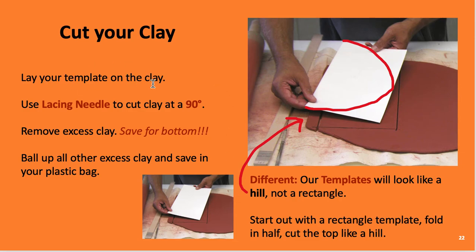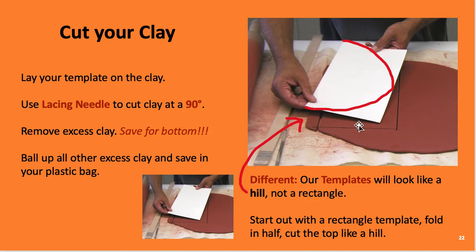Lay your template on the clay and hold your lacing needle at a 90-degree angle — that's straight up and down, vertical. Remove the excess clay because you're going to save it for the bottom; don't ball it up. Our template is going to be a hill shape, not a rectangle. You start with a rectangle piece of paper, fold it in half, and cut it like a hill — that's how you get that shape.